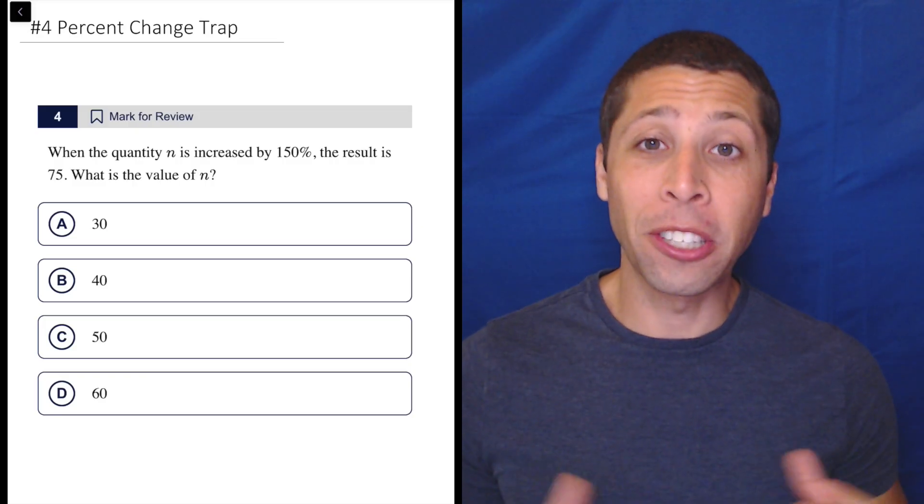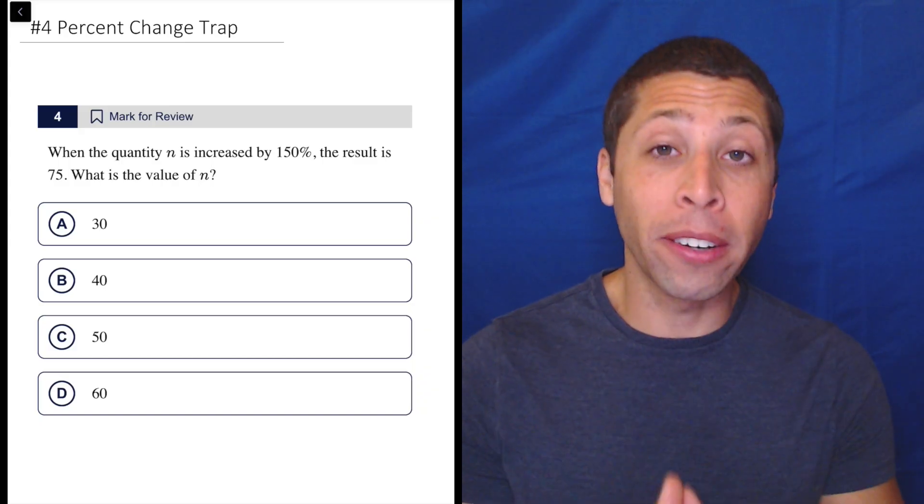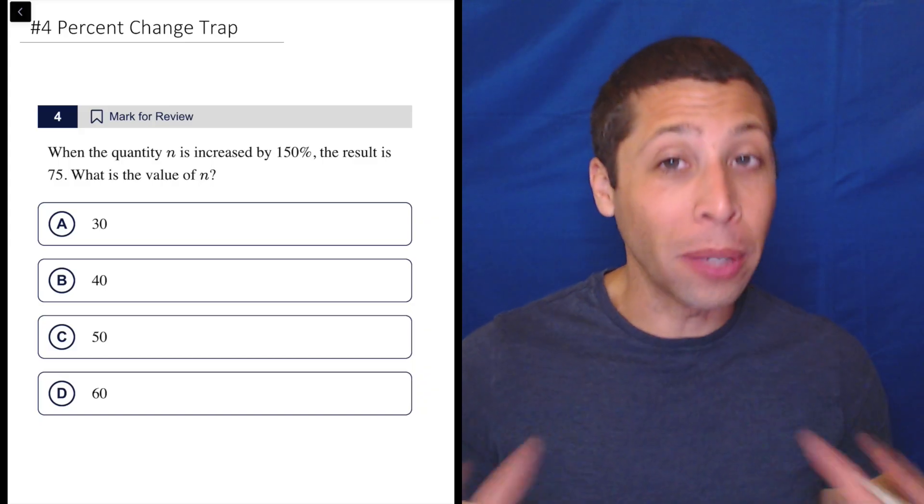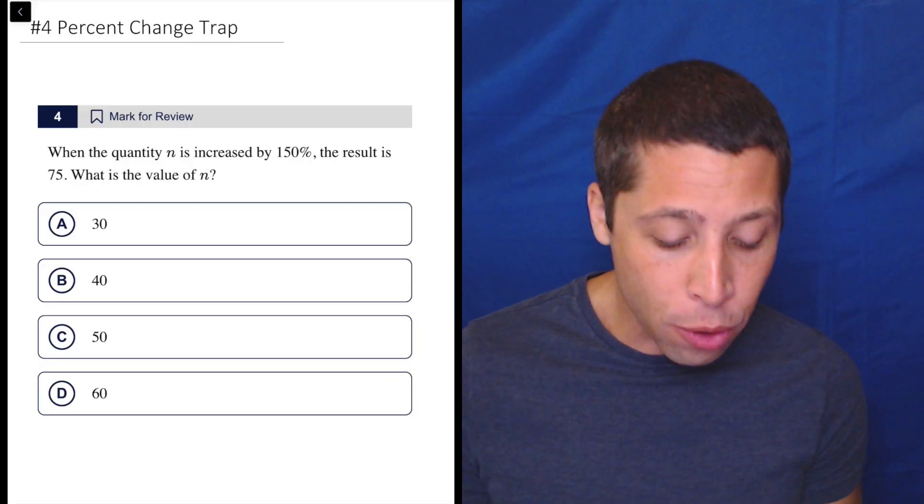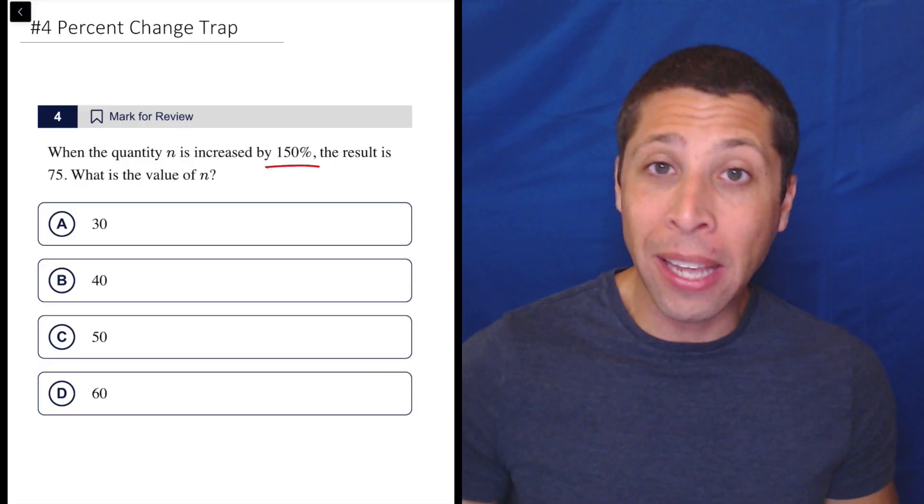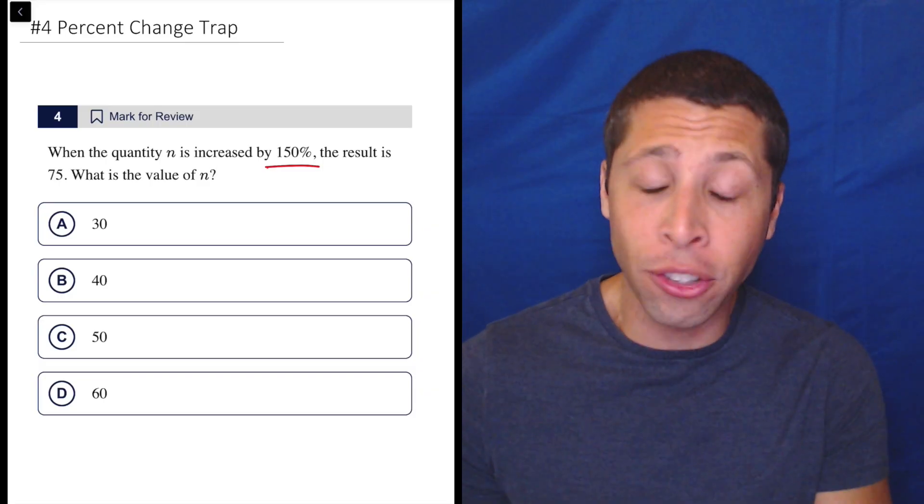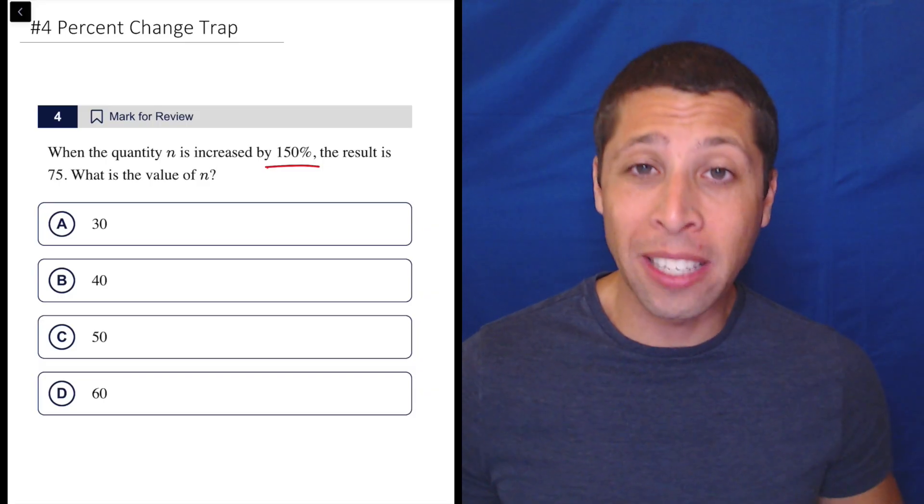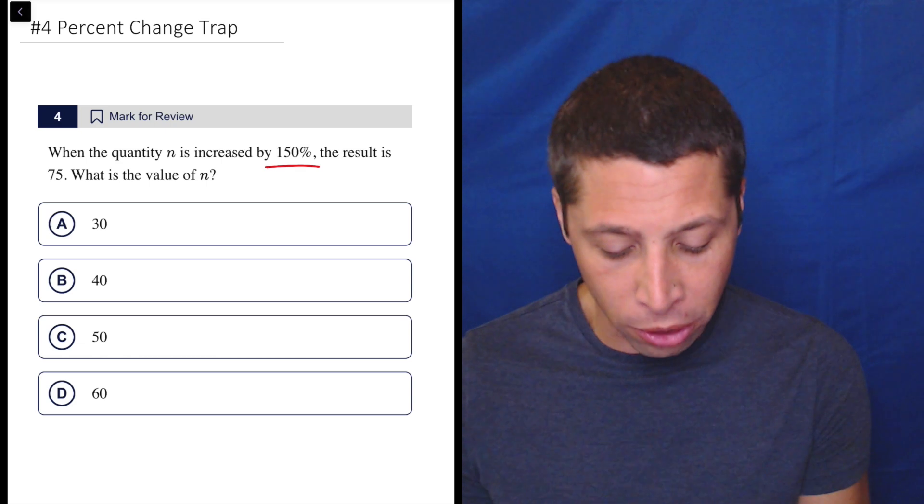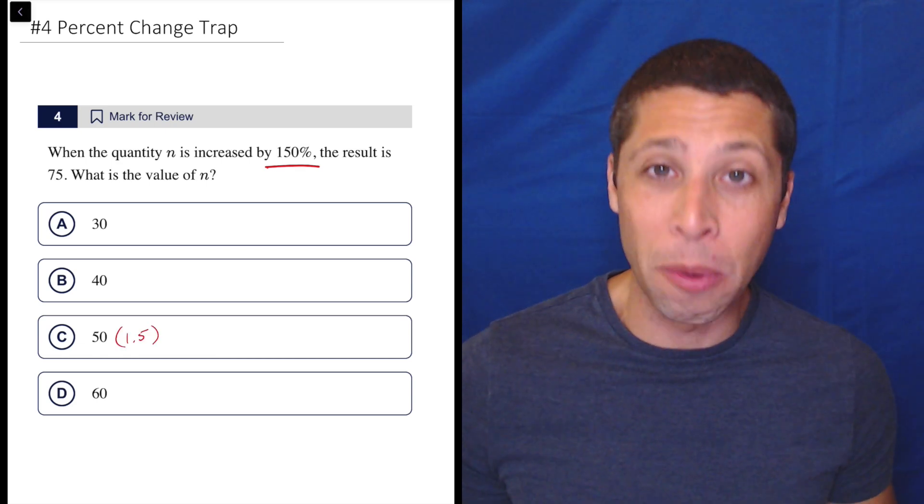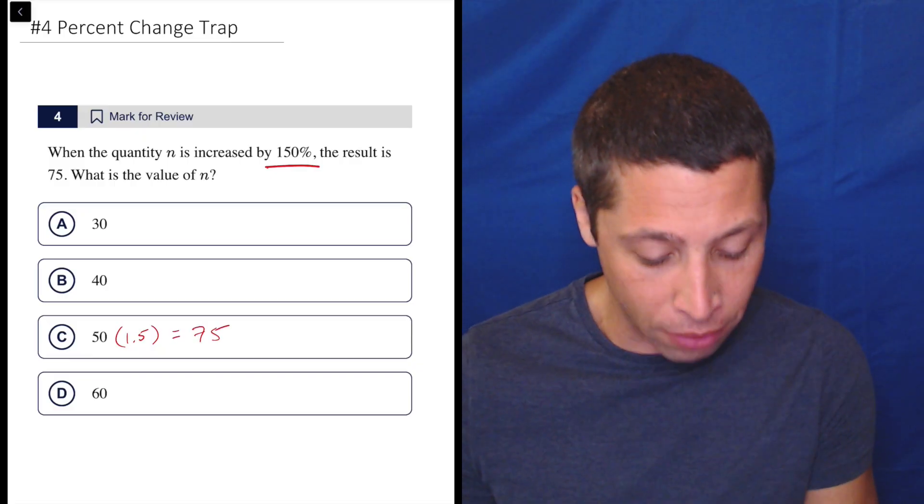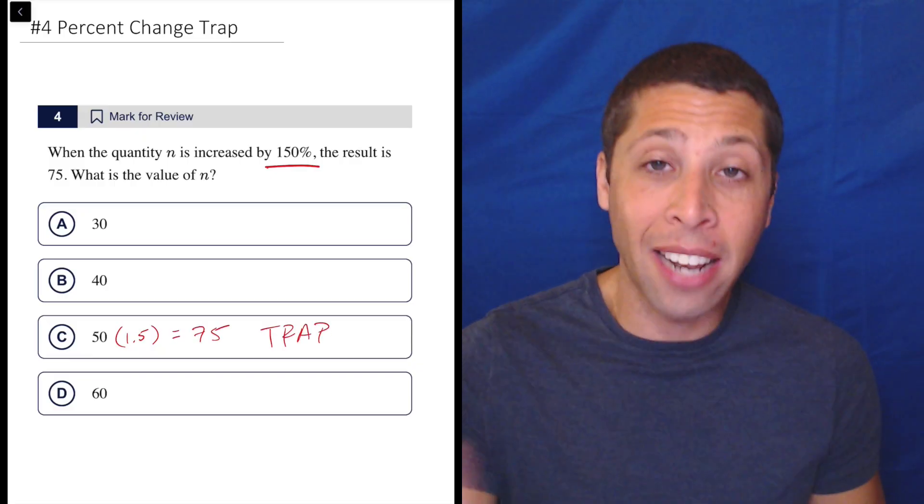We should be very nervous about every single percentage question on the SAT. They are very heavy on trap answers. We got to be really careful. I highly recommend that you use the open formulas, but you can guess and check here and you can do it, and even if you do, you might make the mistake because when we have a percent change, especially of big percentages, we tend to mess things up. What many of you are going to do is you're going to say, I can increase 50 by 1.5. That's going to be 150%, and we will in fact get 75, but that is the trap because that is not what the question says.